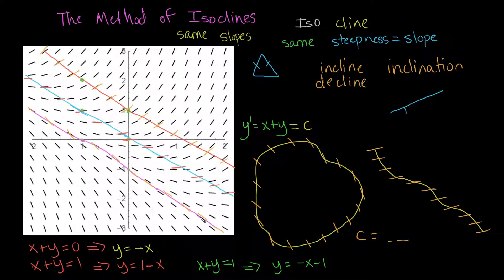You could continue this on forever. In general, the method of isoclines is useful when the isoclines you get are not overly complicated. If it saves time to calculate the isoclines and draw the line segments on them, that's great. But if the slope field is so complicated that solving y for c is implicit or messy, the method of isoclines might not be the best choice. For a simpler slope field like y prime equals x plus y, it's super useful since you can just continue shifting your line to get new slopes. Next, we'll talk about the phase line.